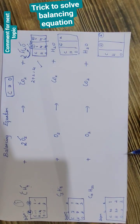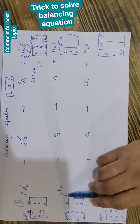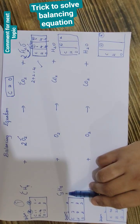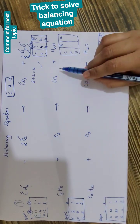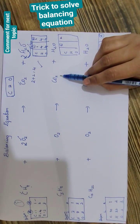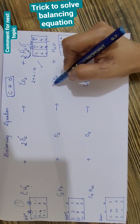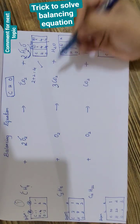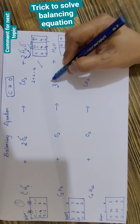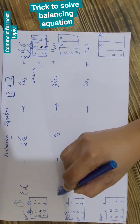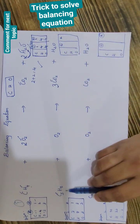Now we'll go for the second one. Same way, we have three carbons on the left side and one carbon on the right side, so I need to make this three. I will add three in front of carbon — so carbon is balanced.